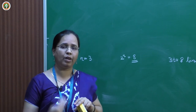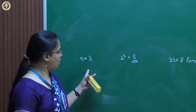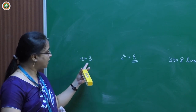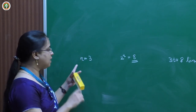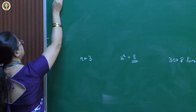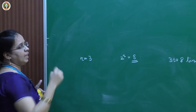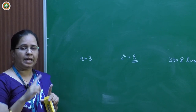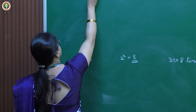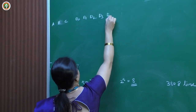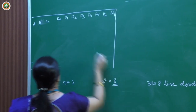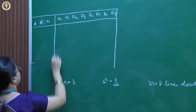To design any combinational logic circuit, we first identify the number of inputs and outputs. The 3-to-8 line decoder has 3 inputs and 8 outputs. We assign the names A, B, and C to the inputs, and D0 through D7 to the outputs. The reason for these names will become clear shortly.